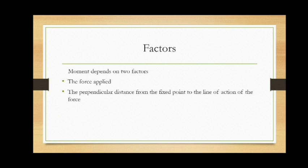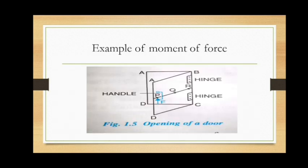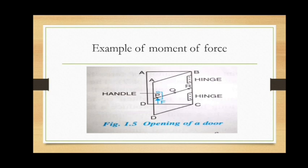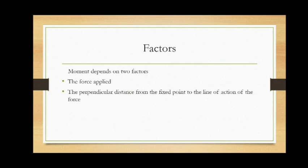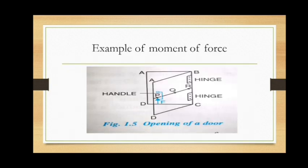There are some factors on which the moment of force depends. The first one is the force applied. Using the door as an example, when we push or pull the door we apply force on the handle. How much force we apply matters. The second factor is the perpendicular distance from the fixed point to the line of action of the force. How much force we need to apply also depends on the distance from this point to the hinge — this is the perpendicular distance. The moment of force depends on these two factors.